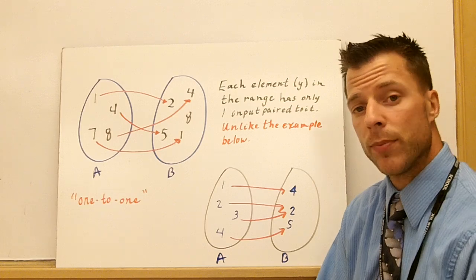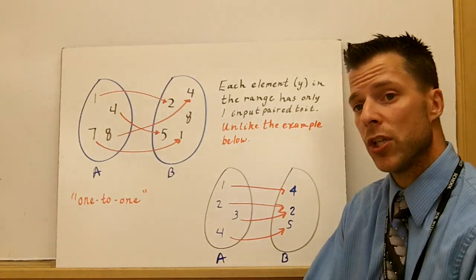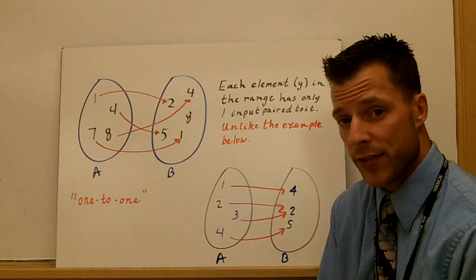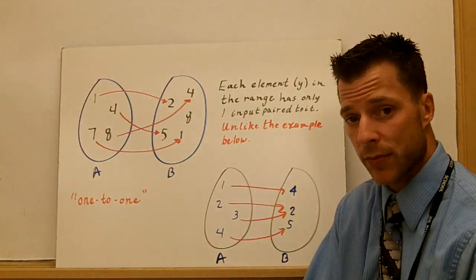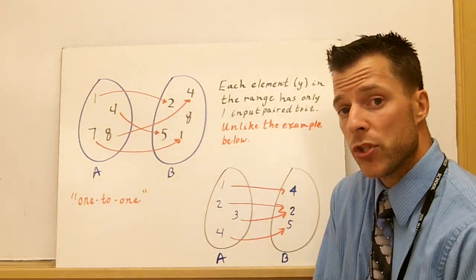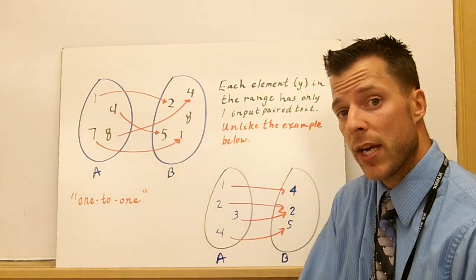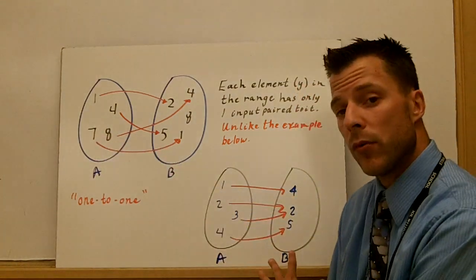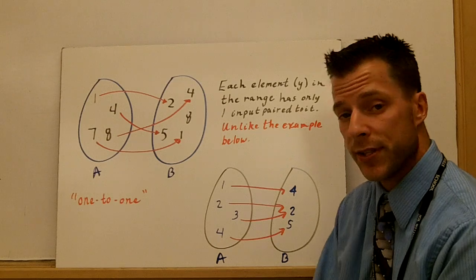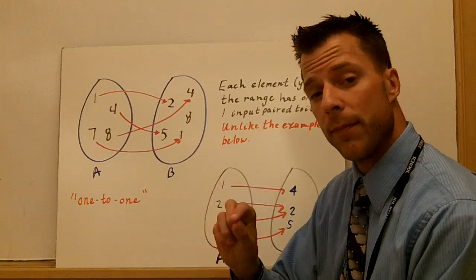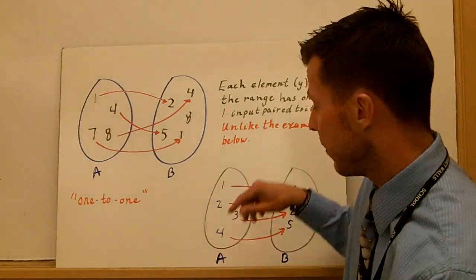And that's a function. But to be a one-to-one function, no different person could have the same birthday. Every person in the classroom would have to have a different birthday. That would be one-to-one. If two people shared a birthday, that's okay because they're different people, but it wouldn't be a one-to-one function because they're paired with the same y value. So again, one-to-one functions, the y value can be paired with only one x value.